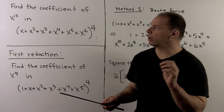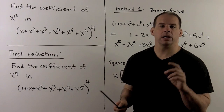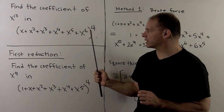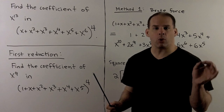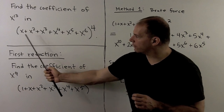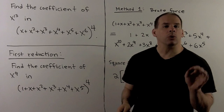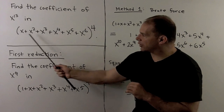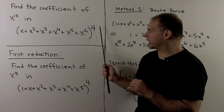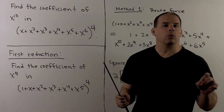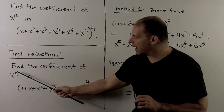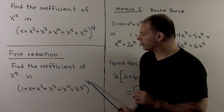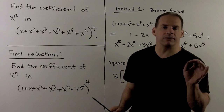Here's our problem: I want to find the coefficient of x to the 13th in the polynomial — we're going to take x plus x squared plus x cubed all the way up through x to the sixth power, then raise that to the fourth power. This looks a little forbidding at first glance. Note we can factor an x out of this, so it comes out as x to the fourth power. What we're really looking at is finding the coefficient of x to the ninth power in (1 + x + ... + x to the fifth) raised to the fourth power. That's only slightly better, but it'll make for nicer bookkeeping.